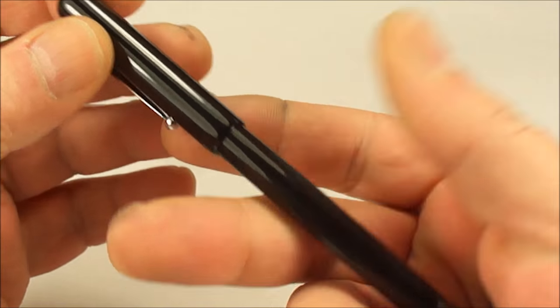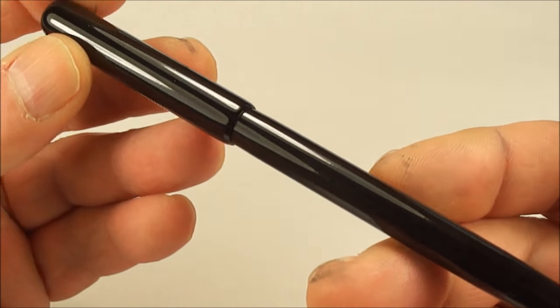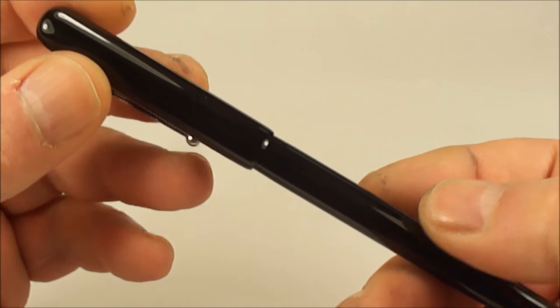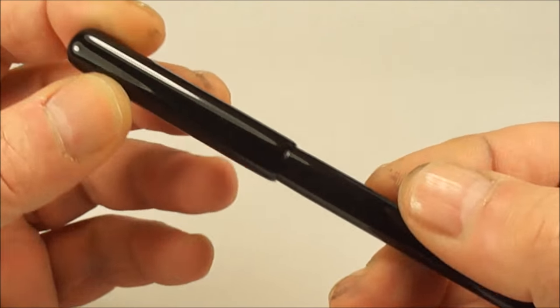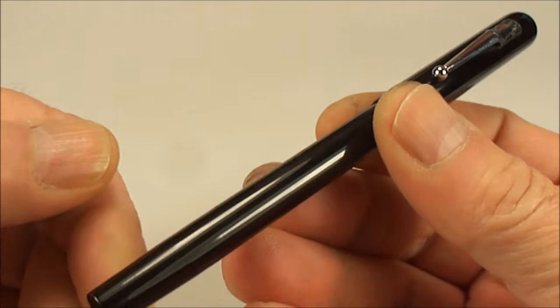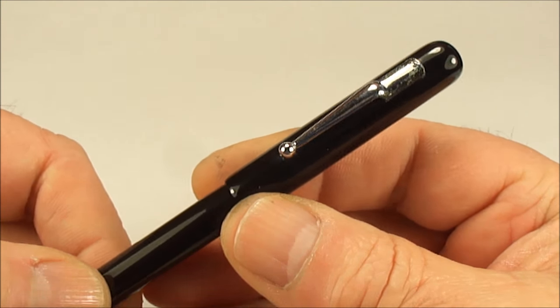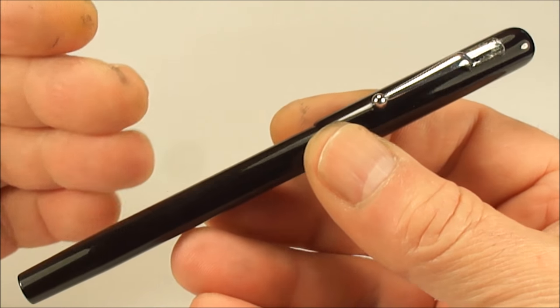As you can see, it comes in this black hard rubber. This model is just simply a plain black hard rubber, there's no chasing on it. Although I believe these models did come with some chasing, some came with overlays, so they came in different configurations.